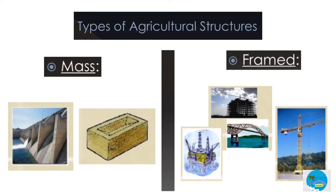Types of Agricultural Structures. Mass structures are structures which are able to resist applied loads by means of their weight itself. Frame structures are structures which are able to resist applied loads by means of their geometric configuration. Most agricultural structures are built in this type.